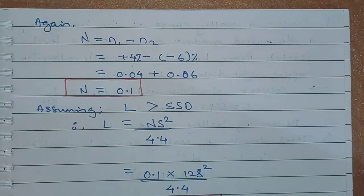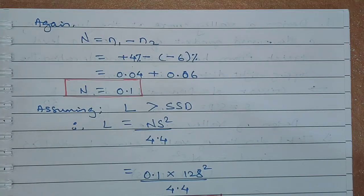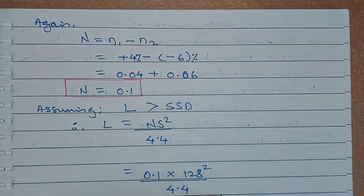Now the angle of deviation N will be calculated as N1 minus N2. Substituting the values of N1 and N2 we get 0.04 plus 0.06. So the angle of deviation N comes out to be 0.1.